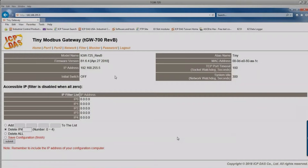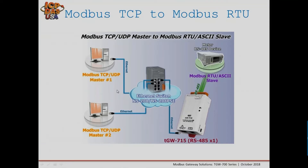To summarize the Modbus TCP to Modbus RTU configuration: set the IP address for the module, COM1 devices are accessed through TCP port 502, and set the baud rate and parity options within the web page to match your slave devices.